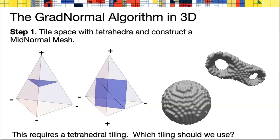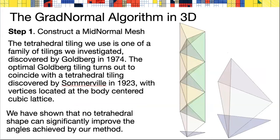To produce this, we have a choice of what tetrahedral tiling should we use. We explored various families of tetrahedral tilings of three space. The most interesting family to explore was the one discovered by Goldberg in 1974. We discovered that the one that works best for the angle computations is the one that coincided with a tetrahedron discovered by Somerville in 1923, whose vertices are located at the body centered cubic lattice.